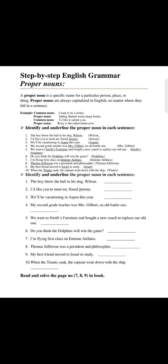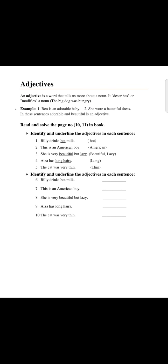The next one is adjectives. Now what are adjectives? An adjective is a word that tells us more about a noun. It describes or modifies a noun. For example, the big dog was hungry. Ben is an adorable baby. So adorable is an adjective. She wore a beautiful dress. Dress is a noun, beautiful modifies the noun.